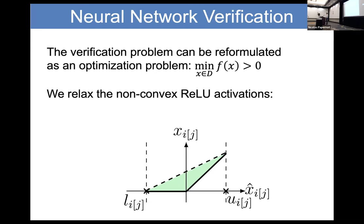The ReLU activations are the reason the problem is so difficult — if it were only linear it would be very easy to solve. The x-axis is the input to the ReLU and the y-axis is the output. Because the ReLU is non-convex, we relax it using what's called the Planet relaxation, for which we need a lower bound and an upper bound on the input to the ReLU.